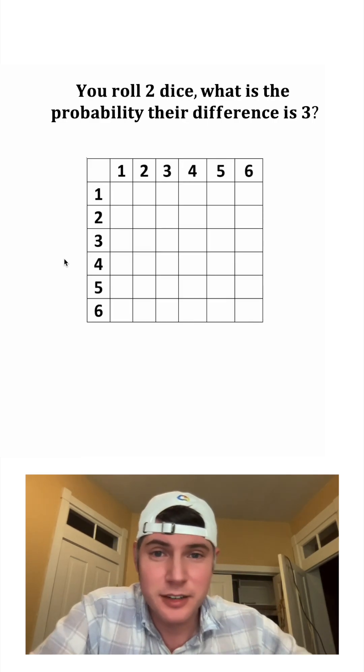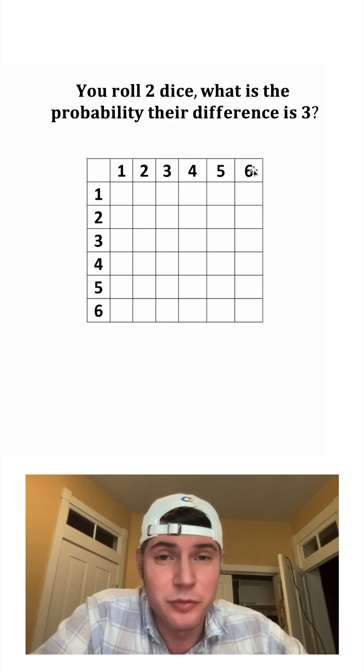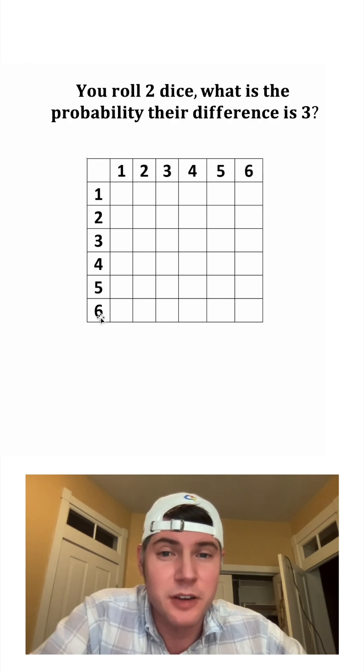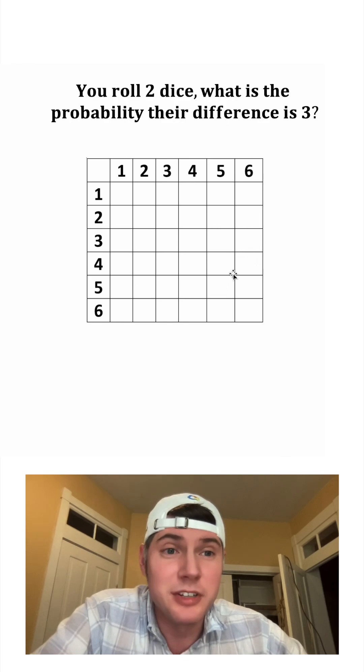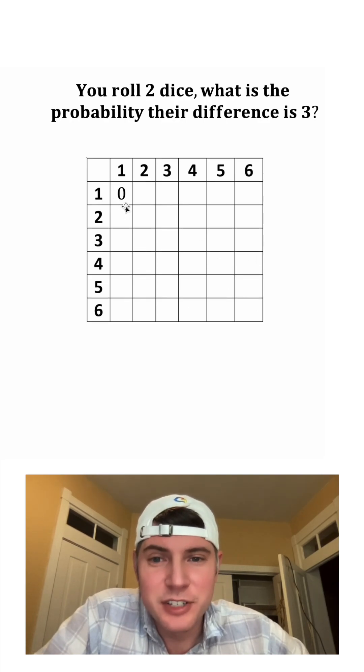First thing I like to use is a table like this. This represents the possible outcomes of the first dice. This represents possible outcomes of the second dice. On the inside we'll put the differences. If both dice get a one, then their difference is going to be zero.